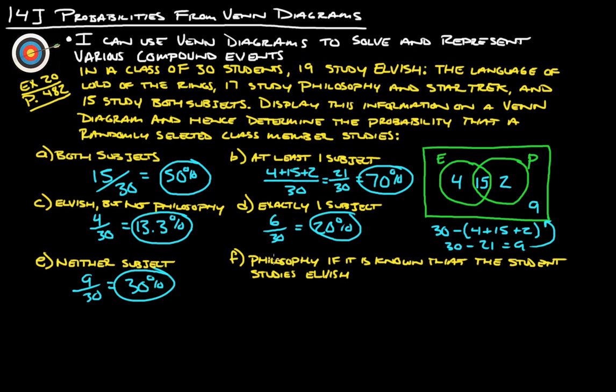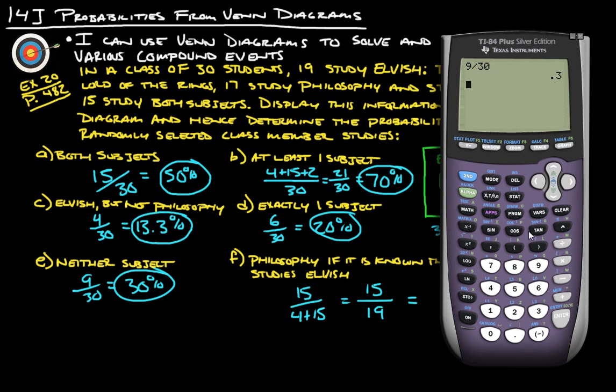Last one, these get a little tricky so you have to understand what they're asking here. What's the probability that a class member studies philosophy if it's already known that the student studies Elvish? So we know that it's given that it's only these people here that we're choosing from. It's given that the person studies Elvish, so the important part here is the bottom is going to be the four plus fifteen, so that's nineteen. And then of these nineteen people, how many people study philosophy? There's the fifteen, so we end up with fifteen out of nineteen. Fifteen divided by nineteen, we get seventy eight point nine percent.